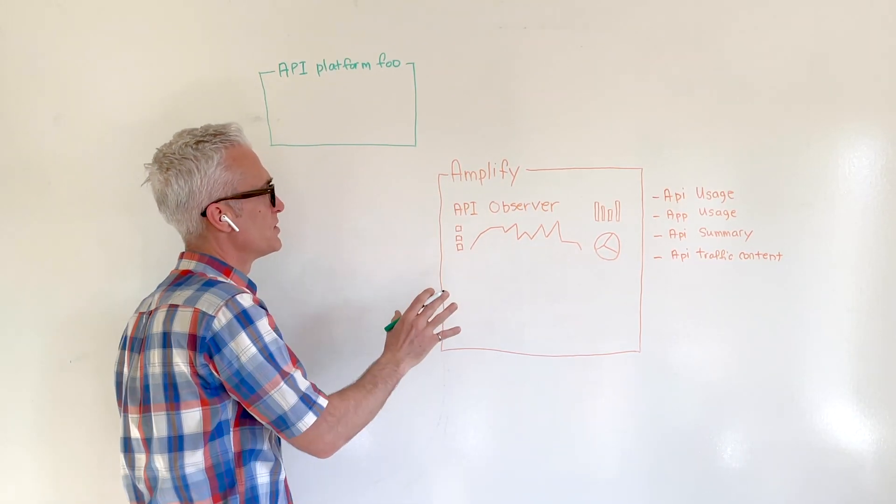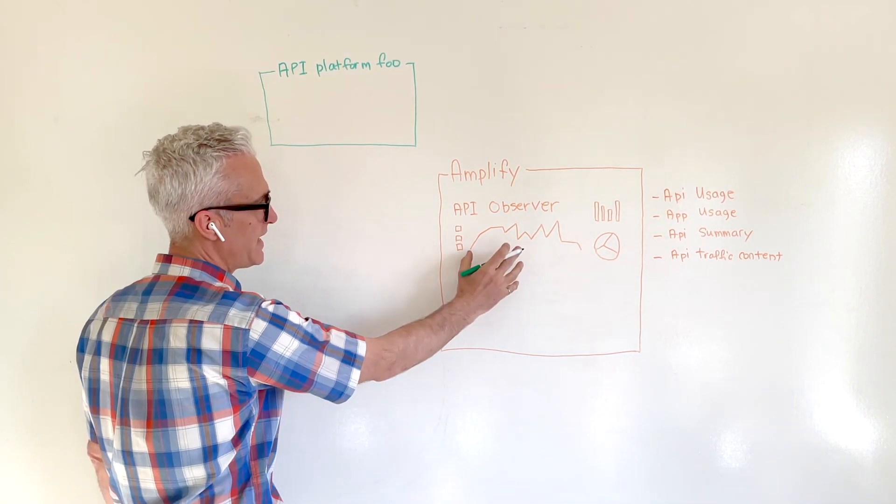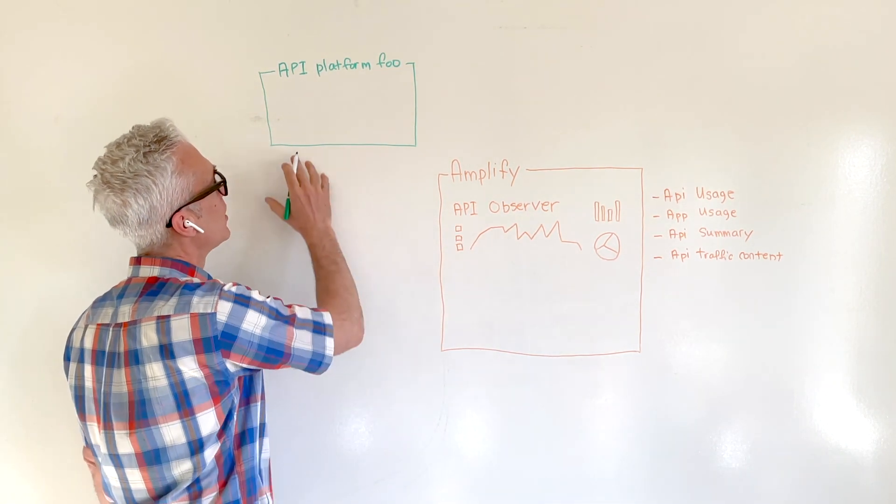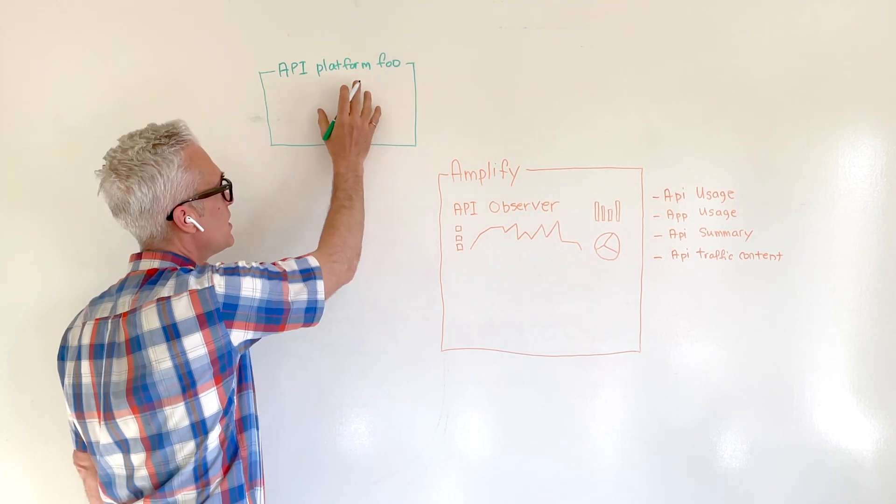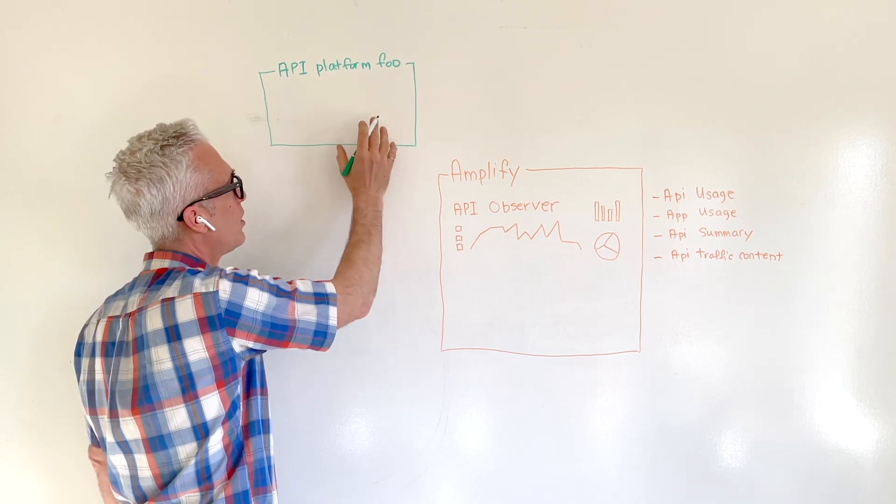And what's different about this API analytics is that the data here comes from your API. Your service could be a MuleSoft, an Apigee, or Calm.